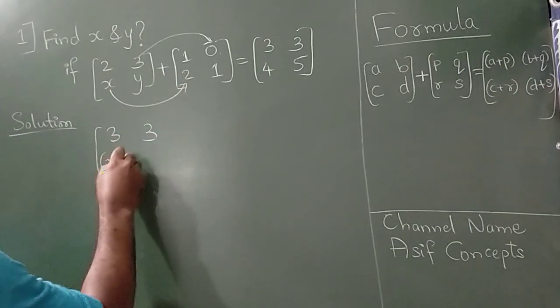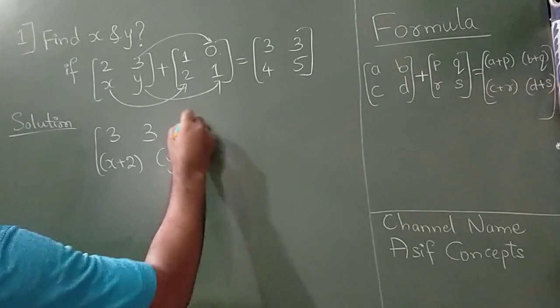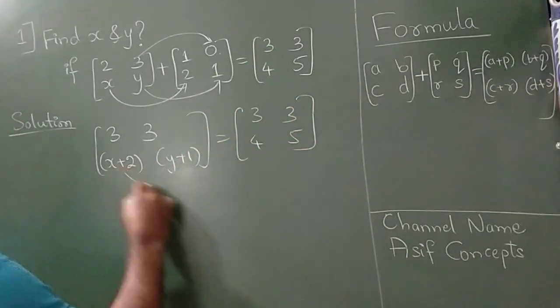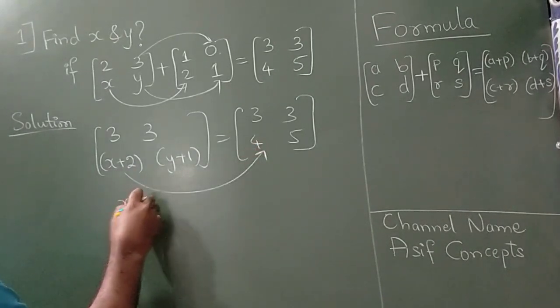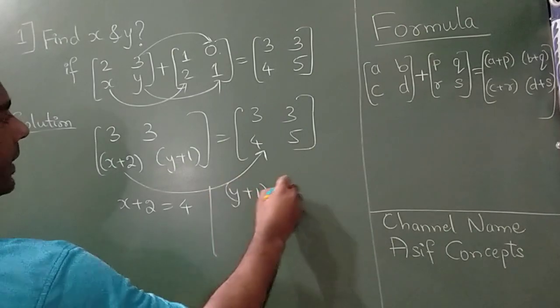This x plus 2 and this is y plus 1 and write this as it is. Again, this x plus 2 is equal to 4 and y plus 1 is equal to 5.